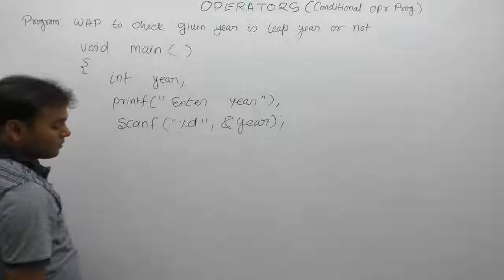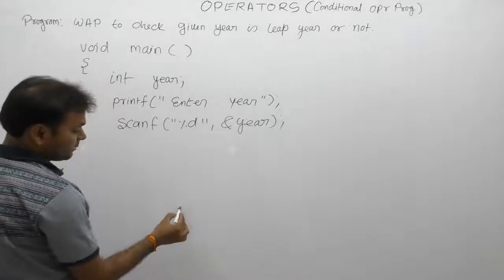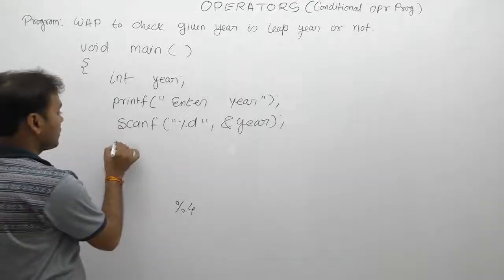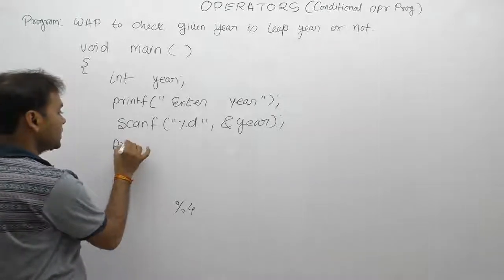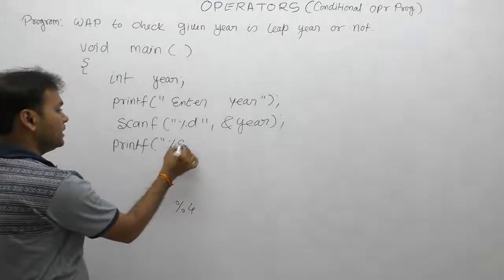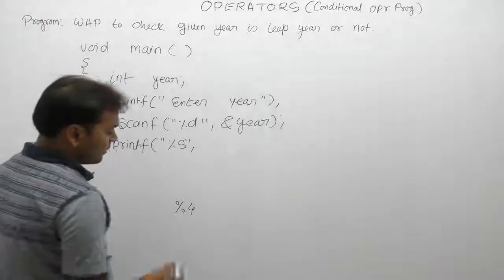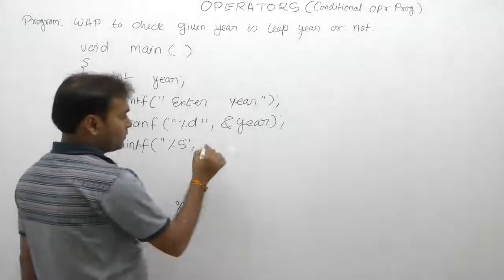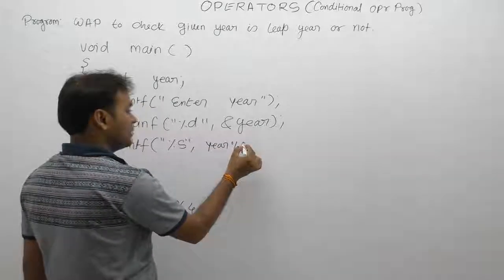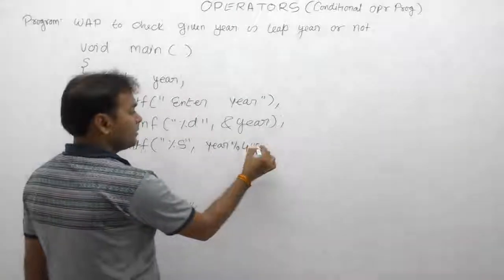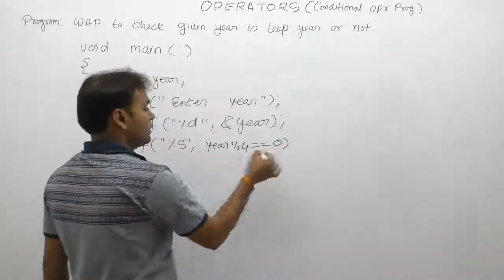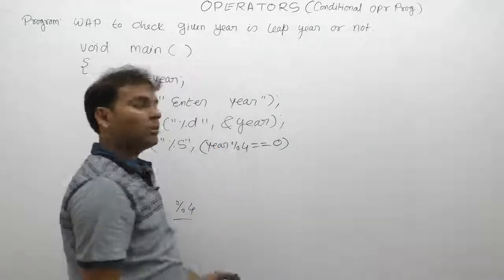Then what is the condition? First condition again, recheck: year should be multiple of 4. How to check given number is multiple of 4 or not? We supply expression directly in the form of printf, percent S. Multiple of 4 or not. Year modulo by 4. If value of year is divided by 4 gives result or remainder as 0, then you can say year is multiple of 4.